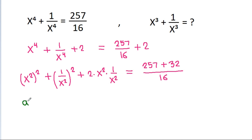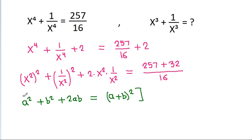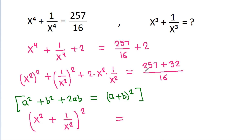Using the identity A squared plus B squared plus 2AB equals A plus B whole squared, we get x square plus 1 by x square whole squared is equal to 289 by 16.